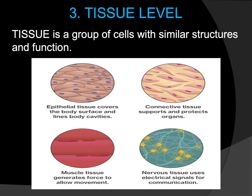Muscle tissues contract and allow movement to occur — not only external voluntary movement such as walking, running, or raising a hand, but also internal movement such as how the heart and stomach function. When muscles contract, they shorten and generate force to produce movement. There are three types of muscle tissue: skeletal muscle (associated with bones), cardiac muscle (in the heart), and smooth muscle (found in internal or hollow organs except the heart).